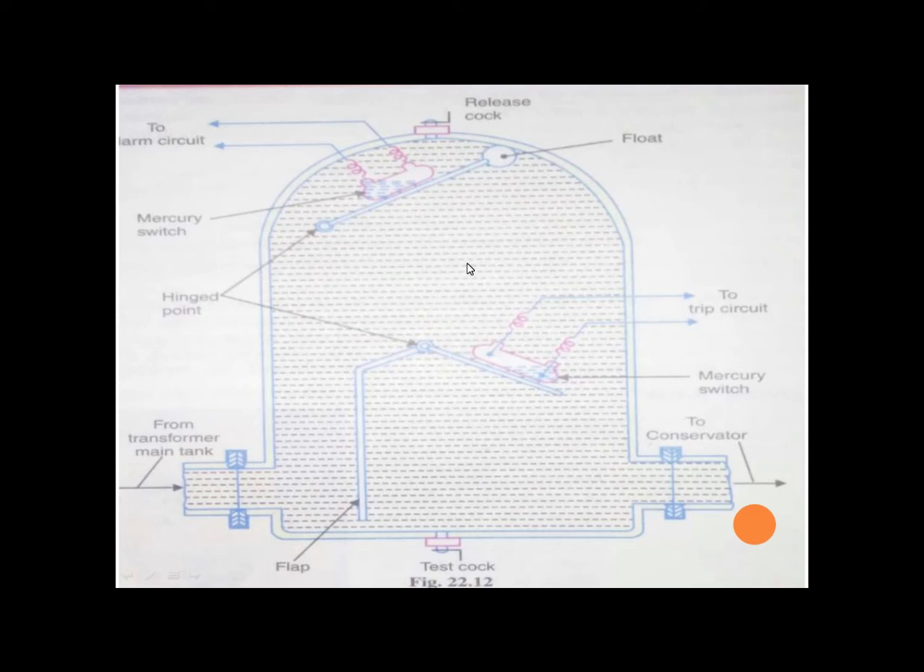Gases are produced, 70% of which are mostly hydrogen. As you start to produce gases, they go to the conservator side. But due to this flap wall, which is used to prevent the flow, the gases accumulate.